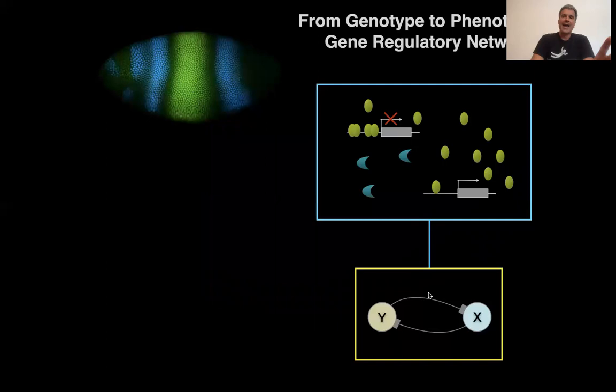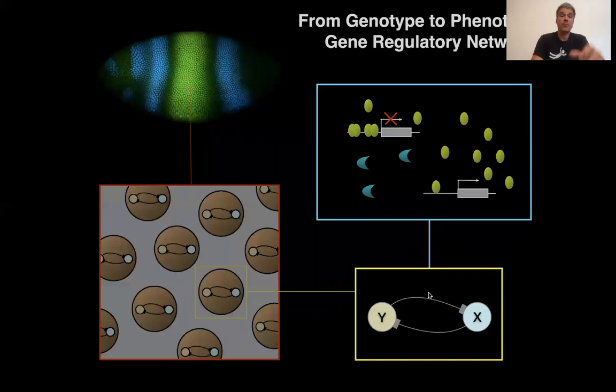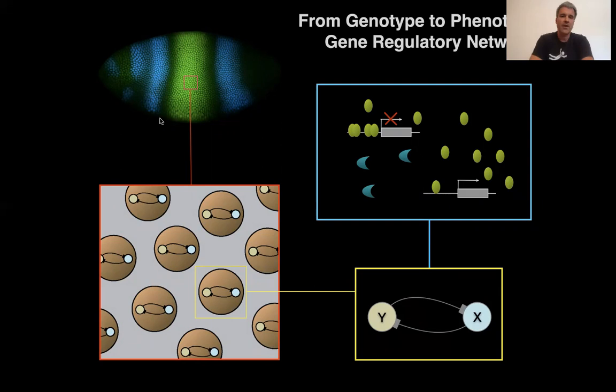That leads to this toggle switch behavior where a nucleus either expresses the green factor, croupal, or expresses the blue factor, giant. Put this in a spatial context and you get this beautiful pattern that you see in the middle of the embryo. Of course the situation is a bit more complicated in the head region. So what we've done is reversed engineered a developmental system: we looked at a pattern, inferred the regulatory network that produces this pattern, and mentally simulated how this could happen because it's a very simple system.